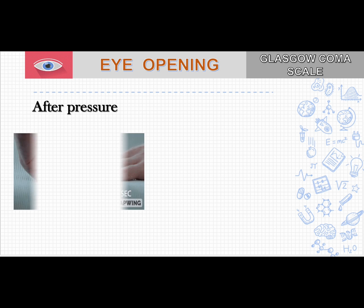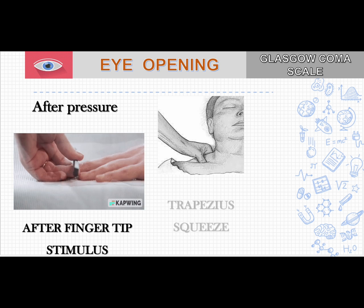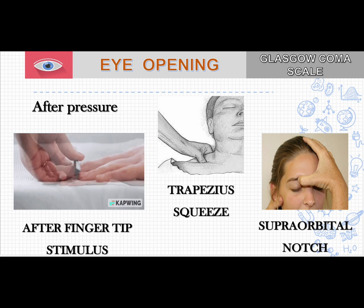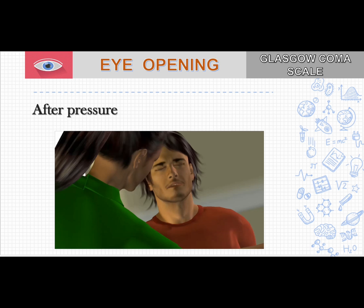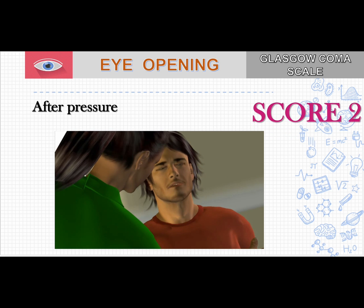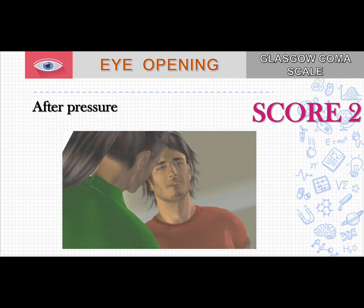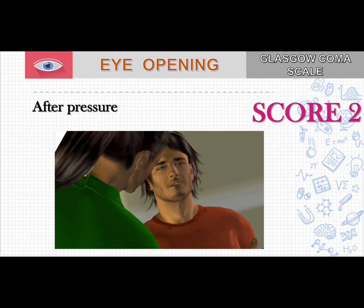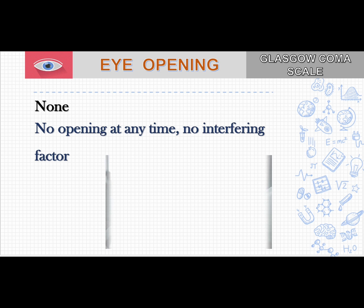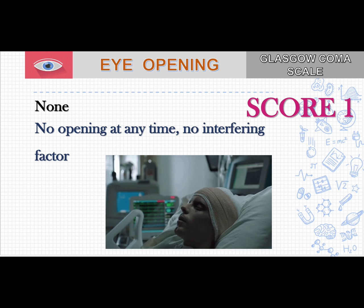If the patient didn't respond to sound, we give pressure. We apply pressure at the fingertips, trapezius squeeze, or supraorbital notch. If the patient opens their eyes after pressure at these areas, you give a score of 2. So: spontaneous is 4, sound is 3, pressure is 2. If the patient does not open their eyes after any of these stimuli, and there are no interfering factors, then a score of 1 is given.